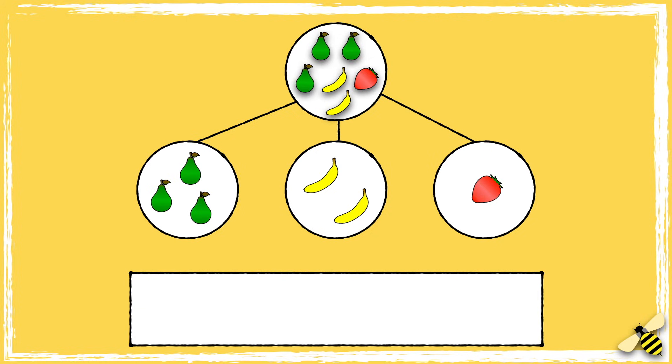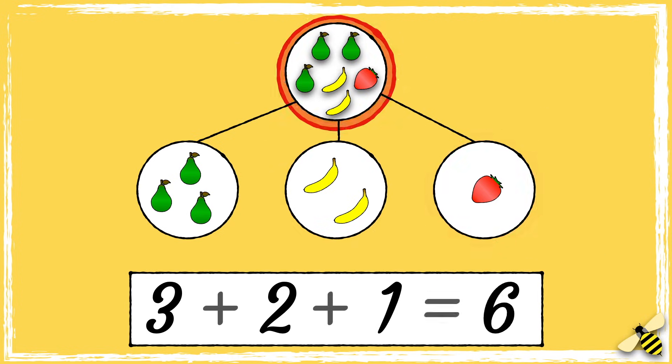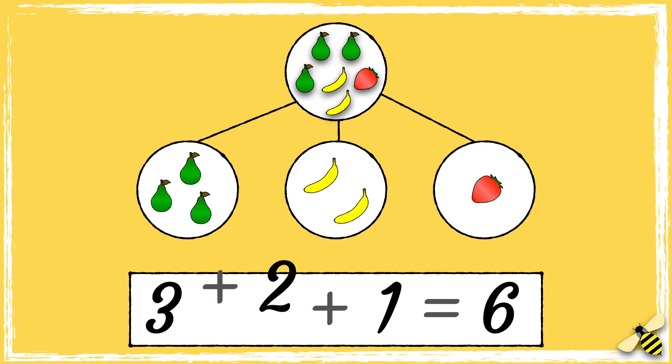Let's see how you got on. Three pears, add two bananas, add one strawberry, equals six pieces of fruit. So the number sentence is three add two add one equals six.